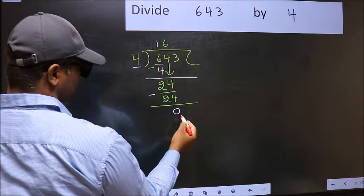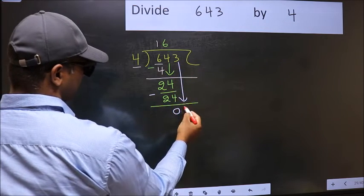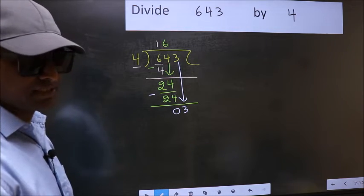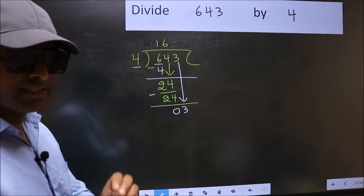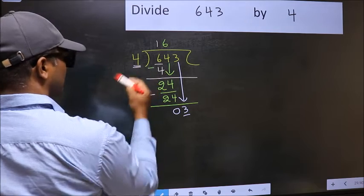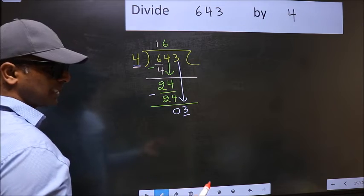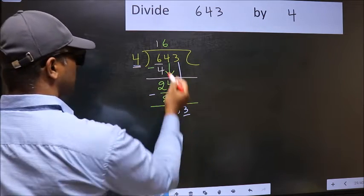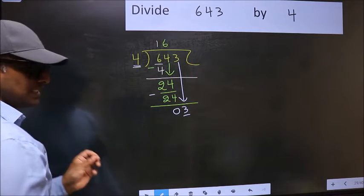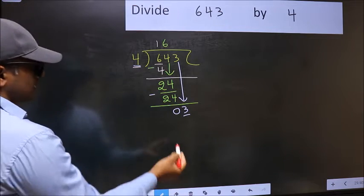After this, bring down the beside number, so 3 down. After this step, the mistake happens. The mistake is this: here we have 3 and here 4. 3 is smaller than 4, so what many do is they directly put a dot and take 0, which is wrong.